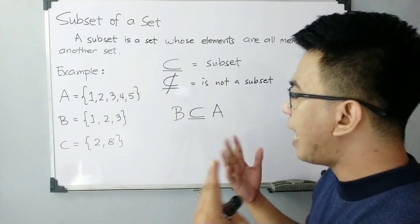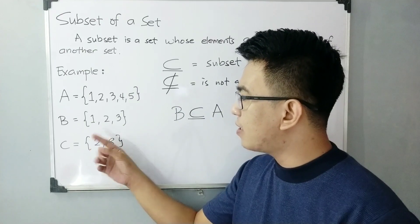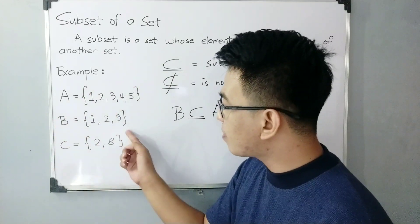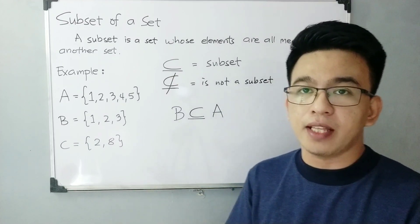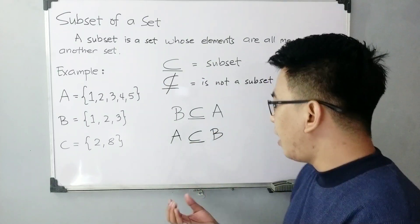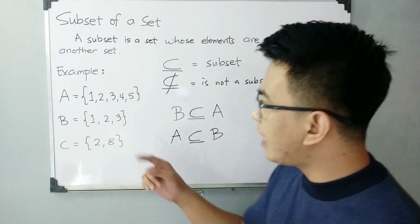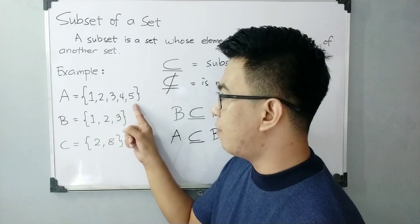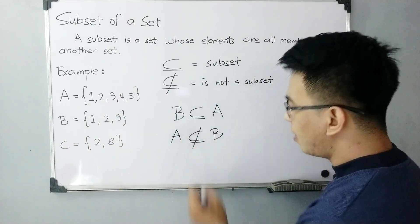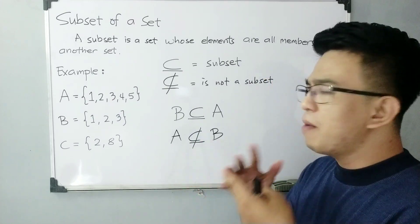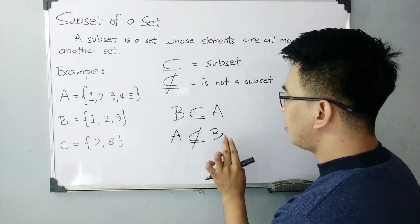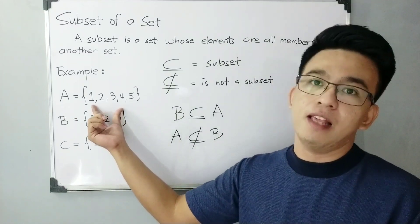Sir, how about A being a subset of B? Is A a subset of B? No. As you can see, the elements of A are 1, 2, 3, 4, and 5, in which these elements are not all inside the elements of set B. So set A is not a subset of B because mas marami ang elements ni set A — mas greater yung number of elements ni set A.